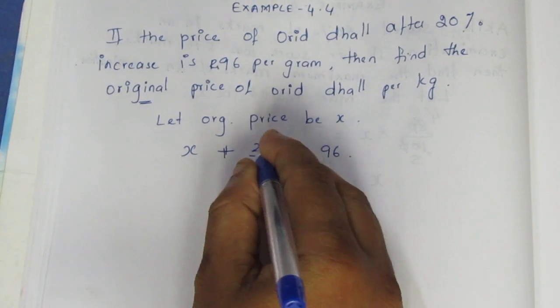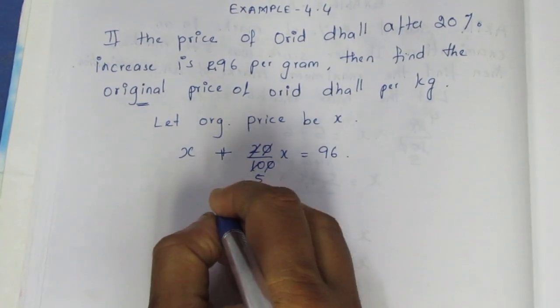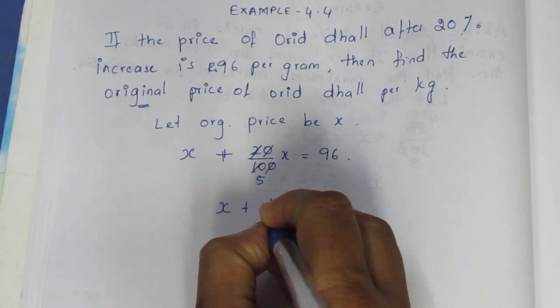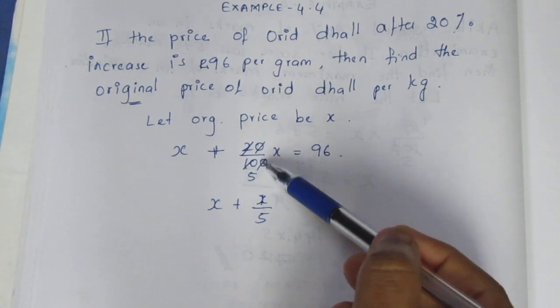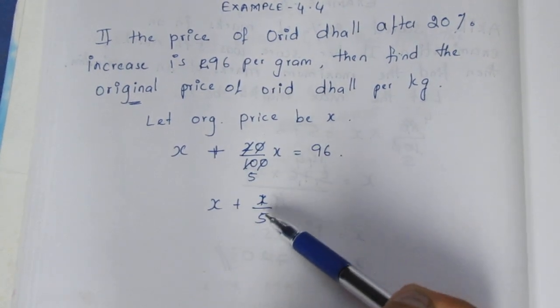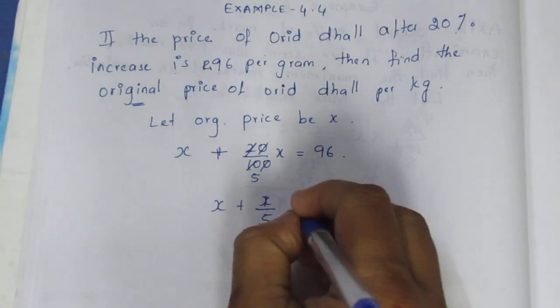Now we can solve it. Simplifying, x plus 1/5 x equals x plus x/5. So 5x plus x over 5 equals 96, which gives us 6x over 5 equals 96.